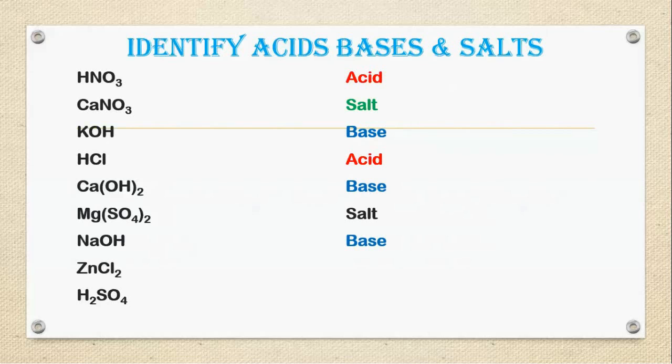Last, ZnCl2. So first part is metal, second part is chloride. It is salt. And last, H2SO4 sulfuric acid of course. So it is quite easy to identify acids, bases and salts. Right?